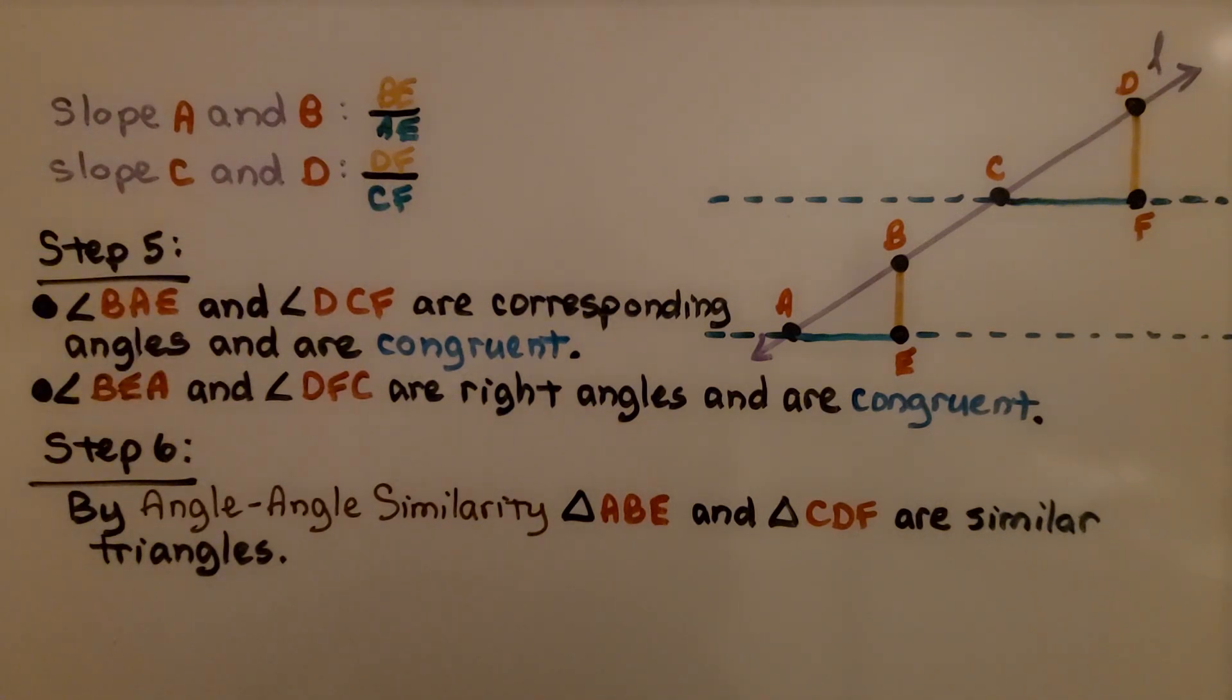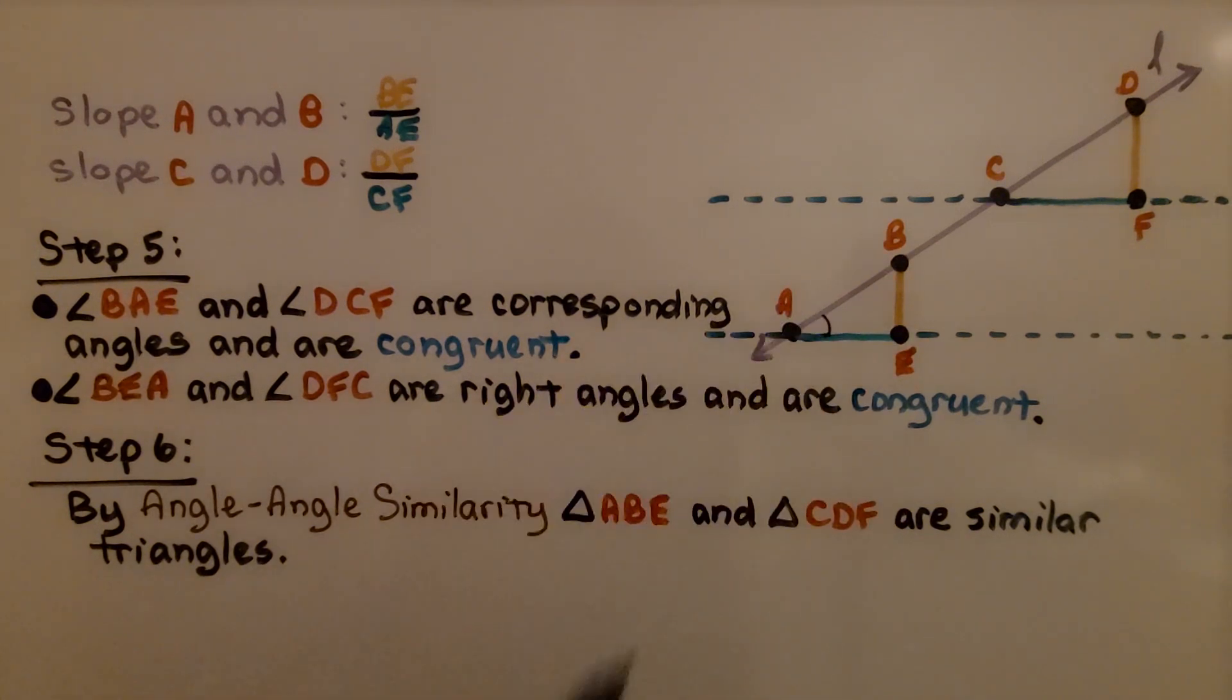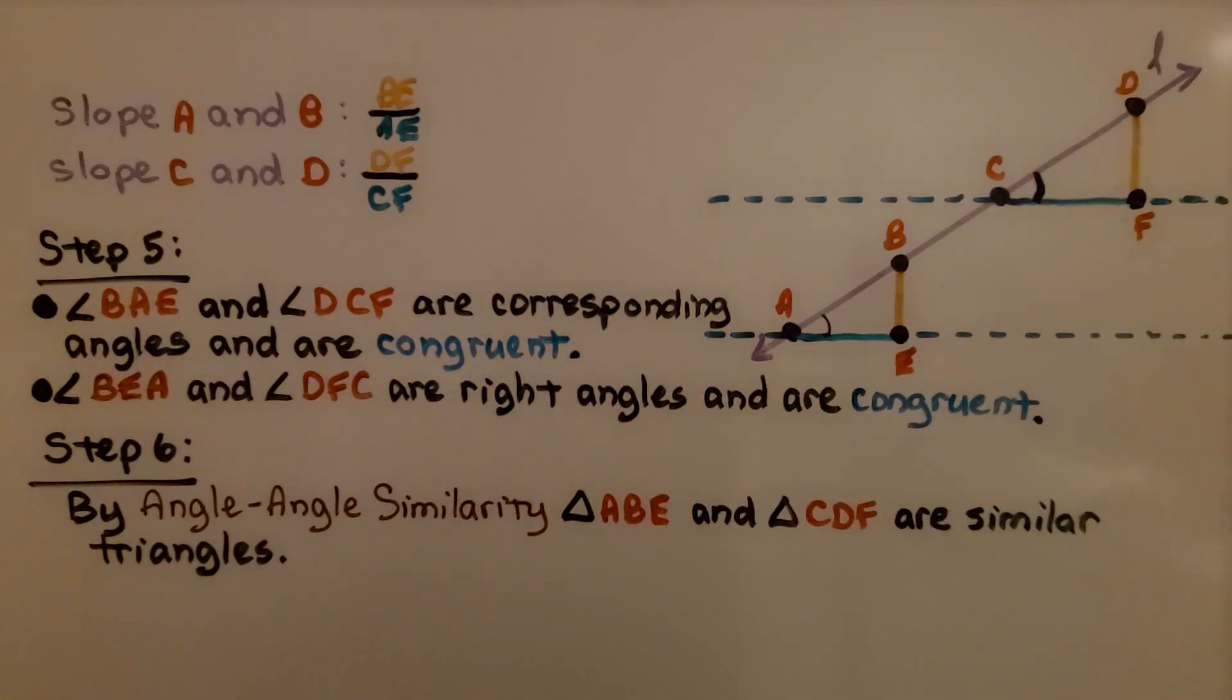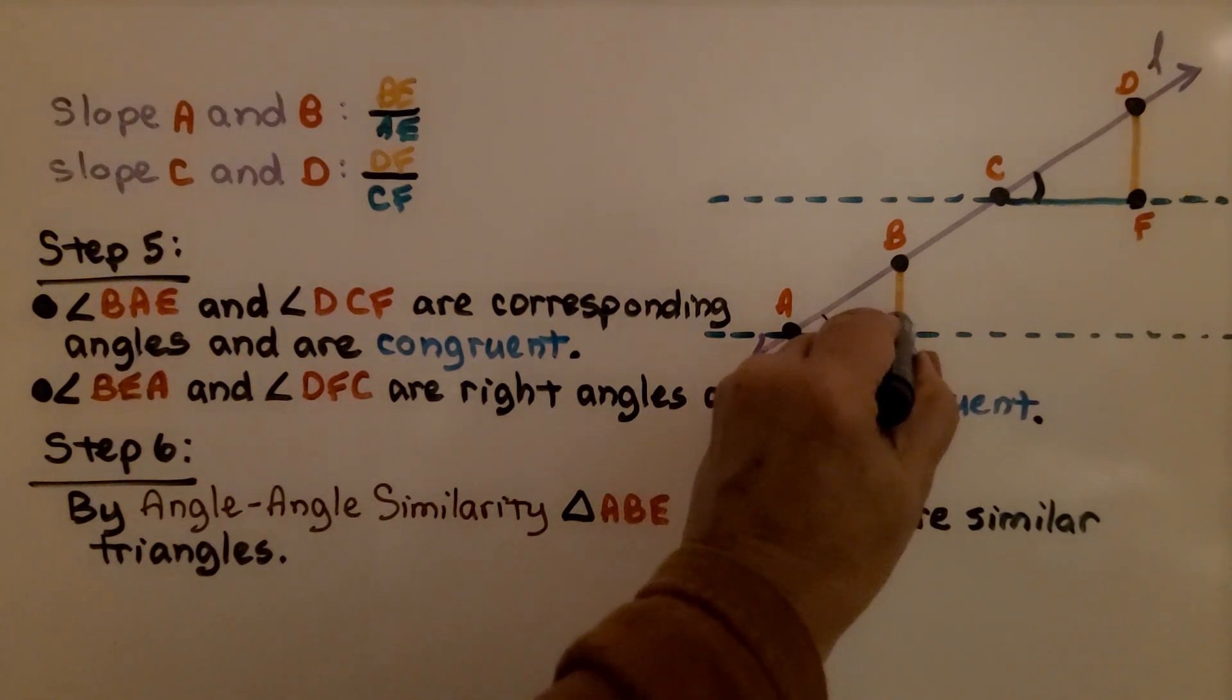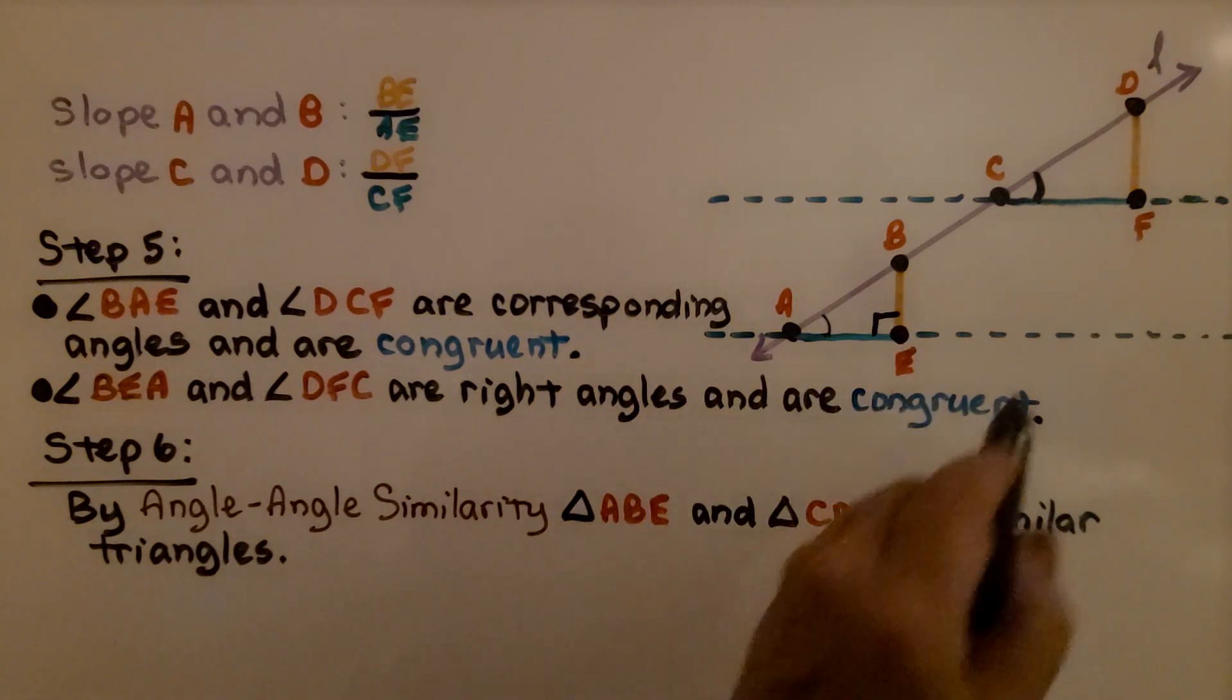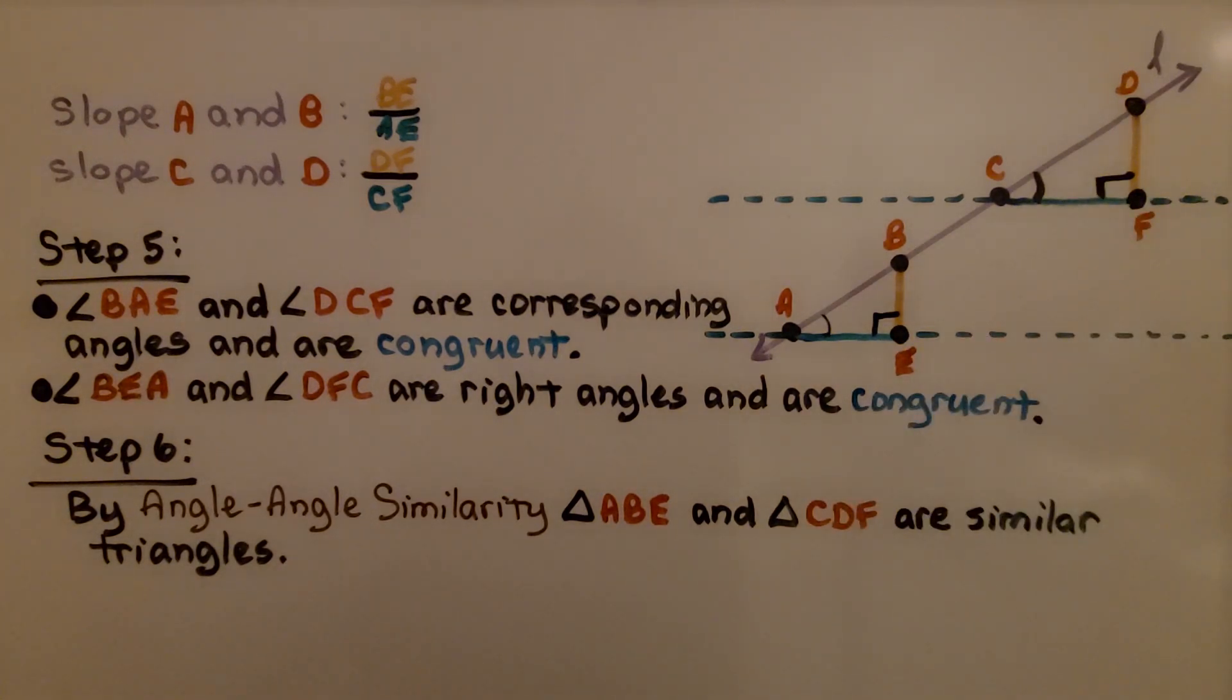Step five is that angle BAE, so that's this angle, and angle DCF, which is this angle, are corresponding angles and are congruent. Angle BEA, that's this angle, and angle DFC, that's that angle, are right angles and are congruent.